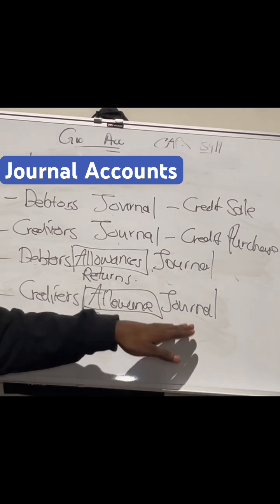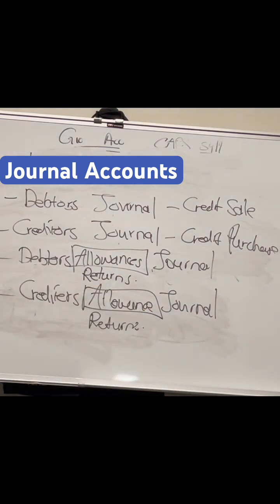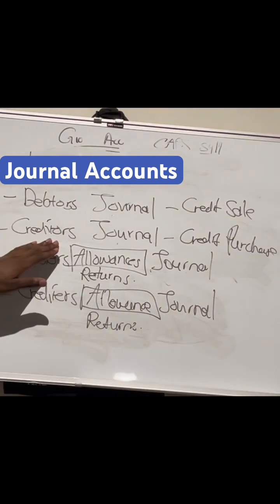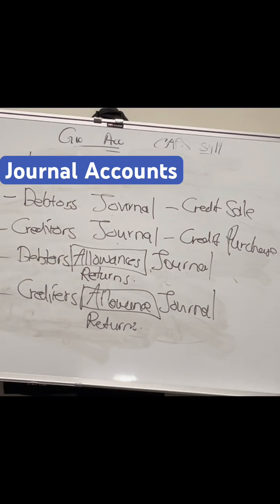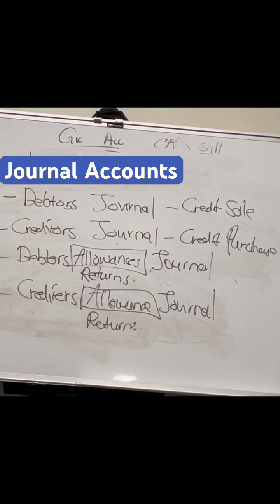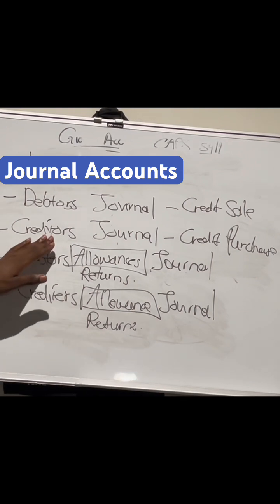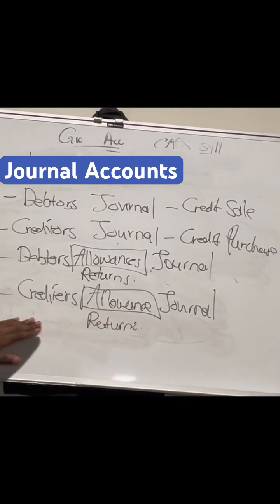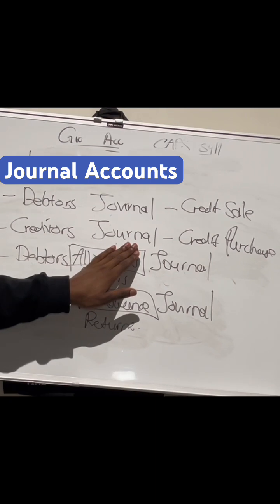What a creditor's allowances journal does is it also affects our creditor's journal. Because the goods are no longer with us, we don't have the obligation to pay for those goods. So we have to reduce our liability that we owe to our creditor. Our creditor's allowance journal also affects our creditor's journal.